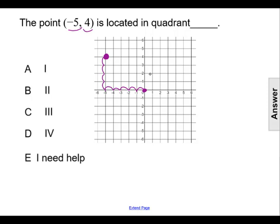If we remember our quadrants by drawing a capital C, we can label this quadrant as 1, this quadrant as 2, this quadrant as 3, and this quadrant as 4, and we can see that the point is located in quadrant 2.